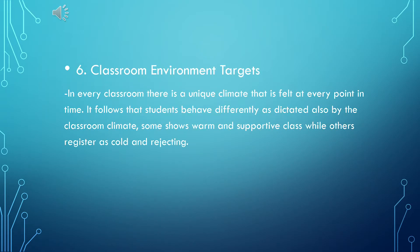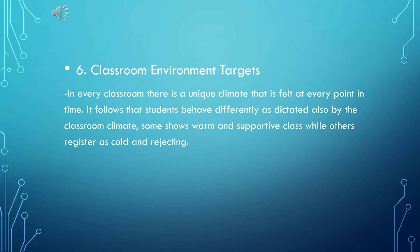Number six in learning targets is the classroom environment target. In every classroom there is a unique climate felt at every point in time — some manifest a comfortable atmosphere, others have a relaxed and productive ambience. As a result, there are classes that are happy and content while others are serious and tense due to the effect of the classroom climate. Students behave differently as dictated by the classroom climate.